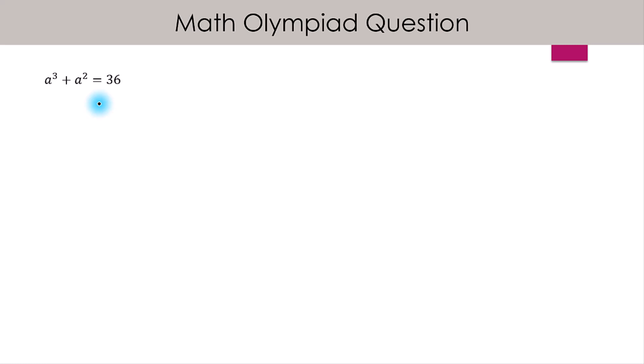In this video, we are going to solve the cubic polynomial a³ + a² = 36. We can write 36 as 27 + 9, which further can be written as 3³ + 3².